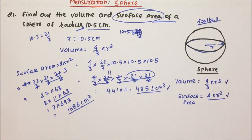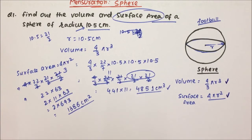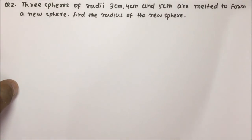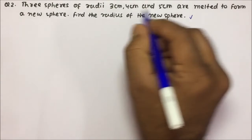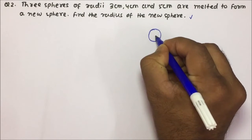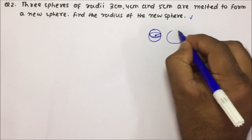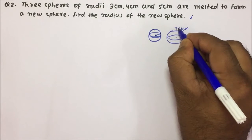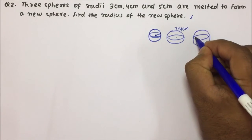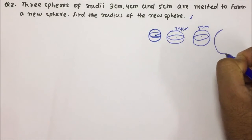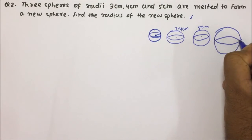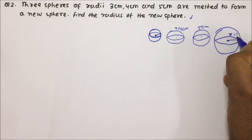Like this we will be able to solve the basic questions of the sphere. If you keep that formula in mind, then solving the questions will be very easy. Now friends, moving towards question number 2. Question number 2 is a very important question. There are 3 spheres of radii 3 centimeters, 4 centimeters and 5 centimeters. These 3 spheres are melted to form a new sphere and you have to calculate what will be the radius of the newly formed sphere.